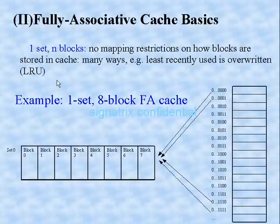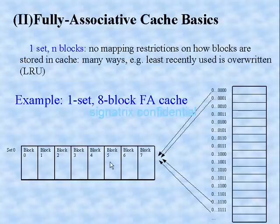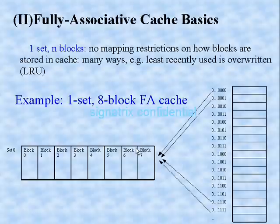Here we are going to use one new concept: Least Recently Used (LRU). Since we are having only one set, we have to map all these locations to this one set. Suppose the same location — for example zero — is also mapped to this set. In that case, which one will be replaced? The thing which is least recently used will be overwritten.